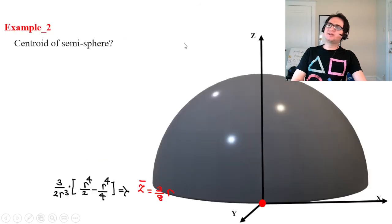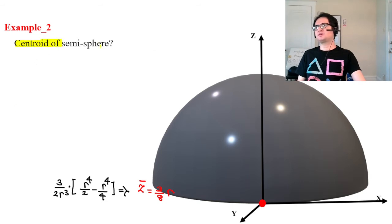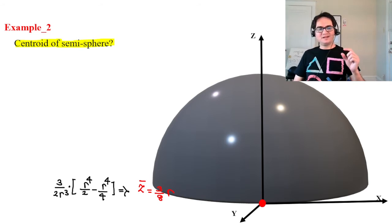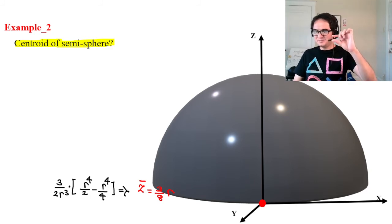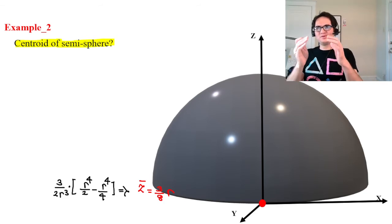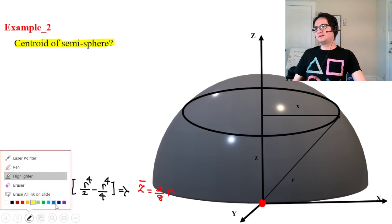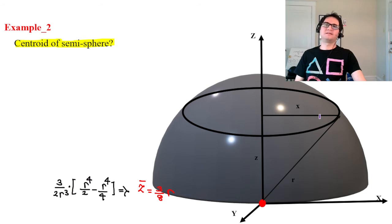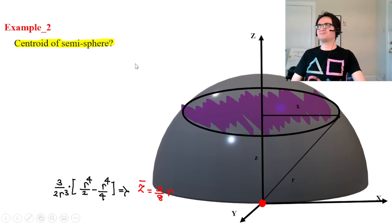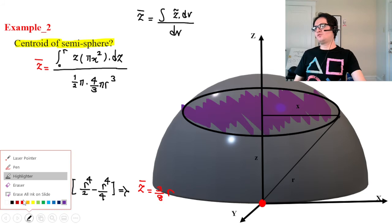Now let's move from 2D to 3D to find the centroid of a semi-sphere. By intuition, we expect it to be slightly lower than the centroid of a semicircle, because there is more mass concentrated closer to the dome. We develop a disk element to confirm this.